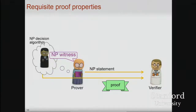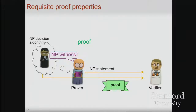Generalizing: we have an NP statement, an NP witness, and an NP decision algorithm. We want the proof system to provide soundness — specifically computational soundness, meaning soundness against any cheating prover that is computationally bounded: asymptotically runs in polynomial time, concretely bounded by some specific running time under well-accepted cryptographic hardness assumptions. The nickname for computationally sound proofs is 'arguments.'